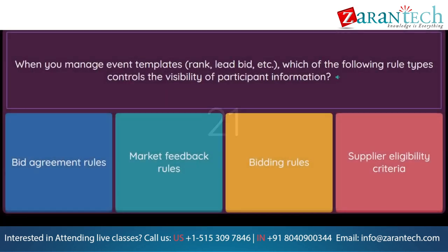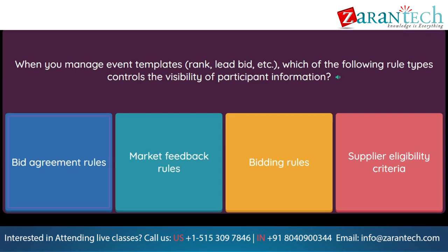Question: When you manage event templates for rank, lead bid, etc., which of the following rule types controls the visibility of participant information? Option 1: bid agreement rules. Option 2: market feedback rules. Option 3: bidding rules. Option 4: supplier eligibility criteria.